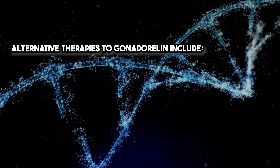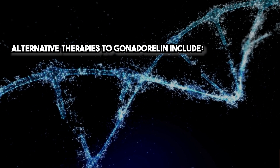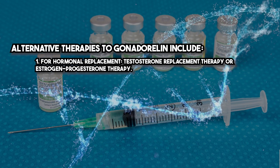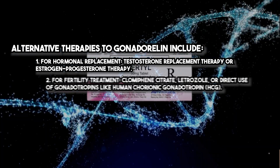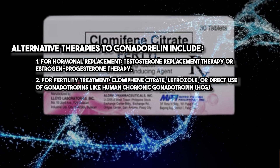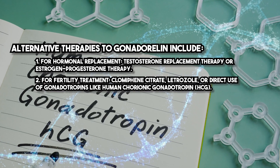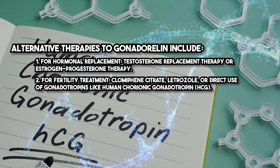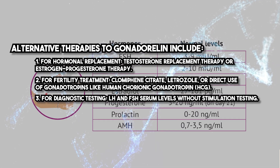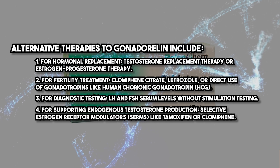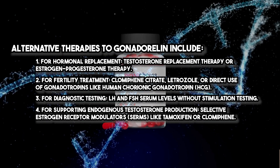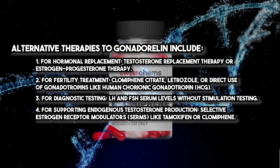Alternative therapies to gonadurilin include: for hormonal replacement, testosterone replacement therapy or estrogen/progesterone therapy; for fertility treatment, clomiphene citrate, letrozole, or direct use of gonadotropins like Human Chorionic Gonadotropin, HCG; for diagnostic testing, LH and FSH serum levels without stimulation testing; and for supporting endogenous testosterone production, selective estrogen receptor modulators, SERMs, like tamoxifen or clomiphene.